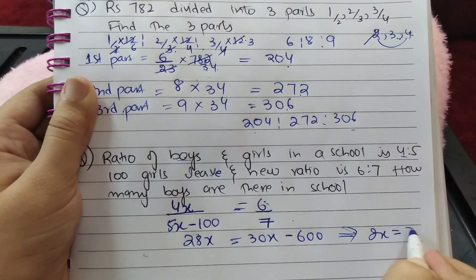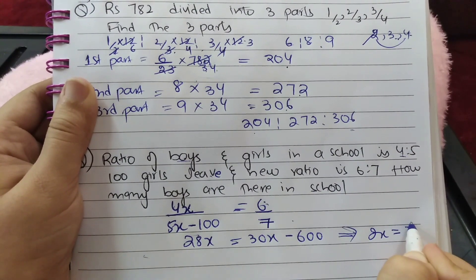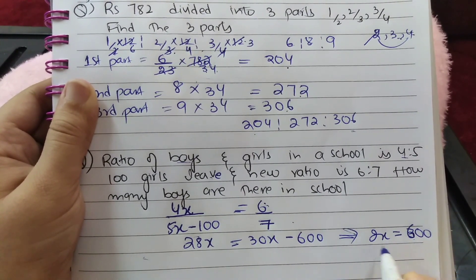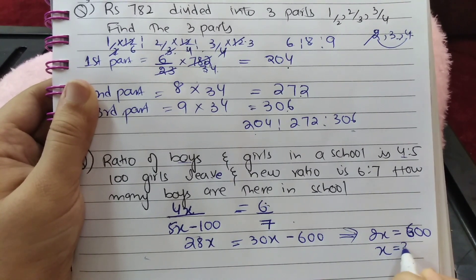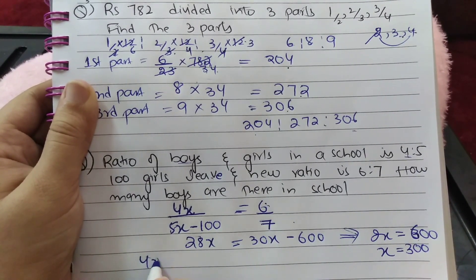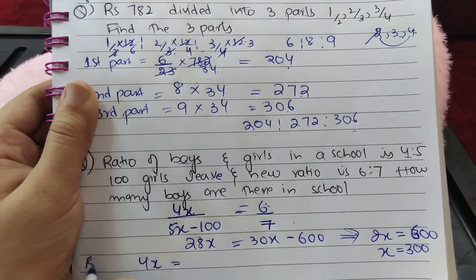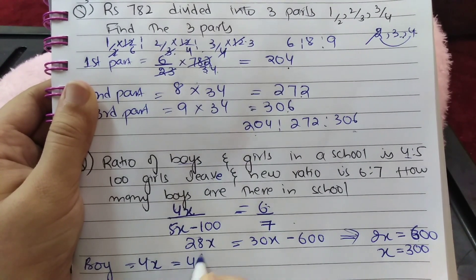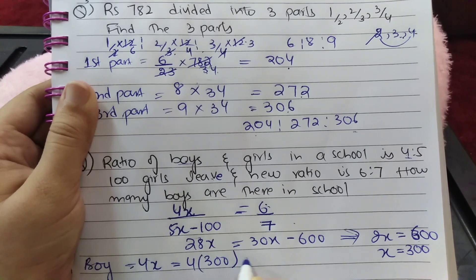2x = 600, so x = 300. Number of boys = 4x = 4 × 300 = 1200.